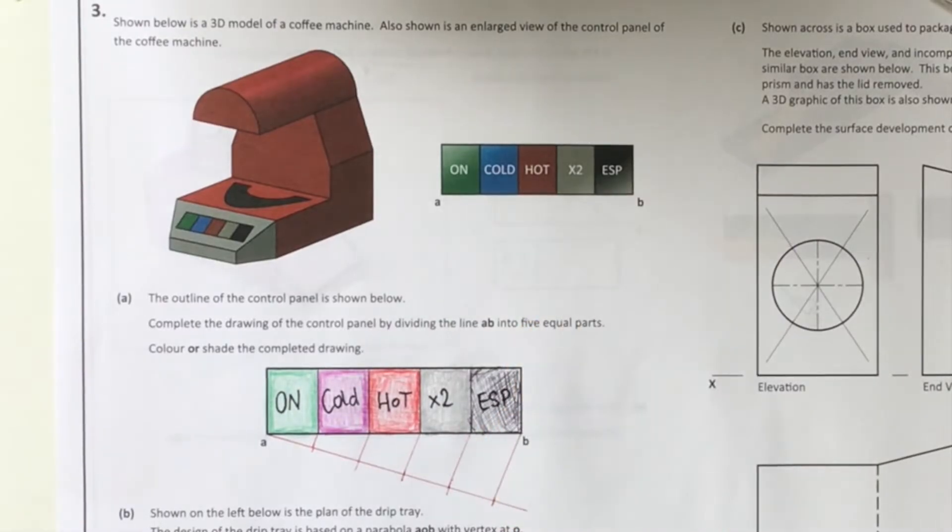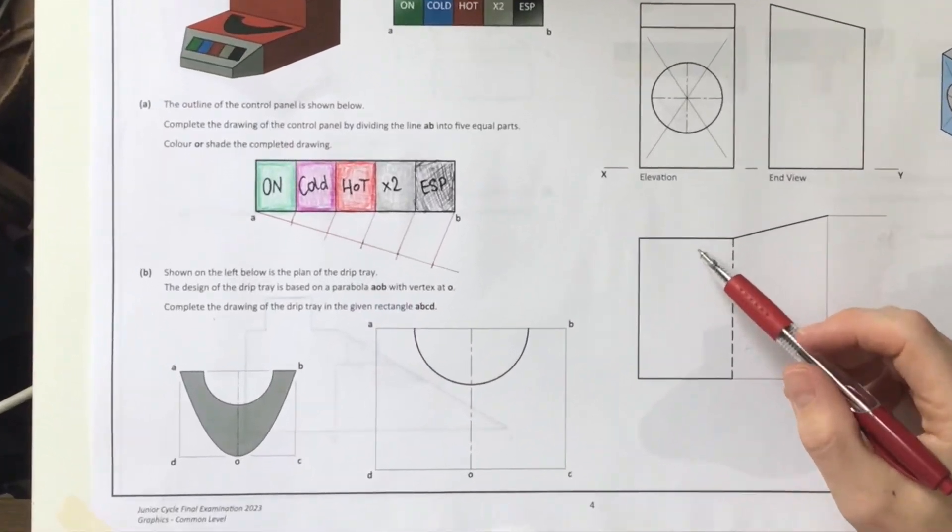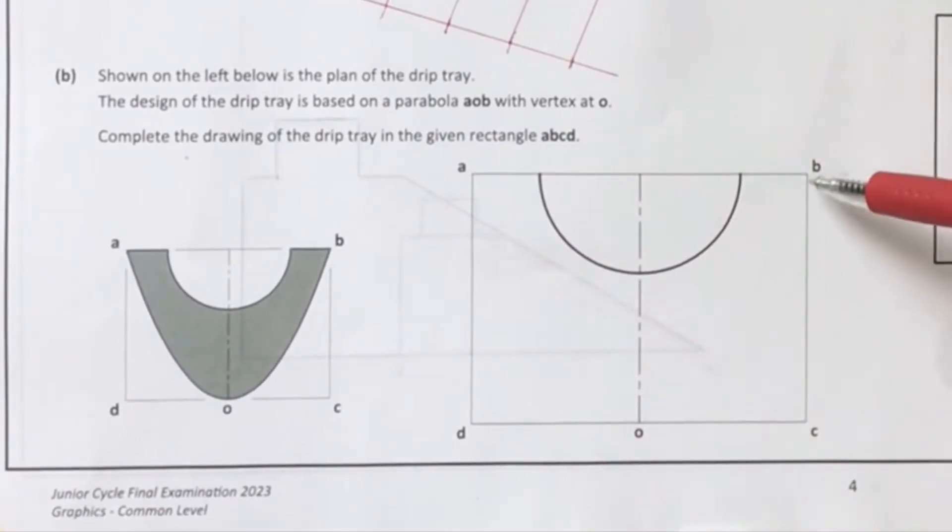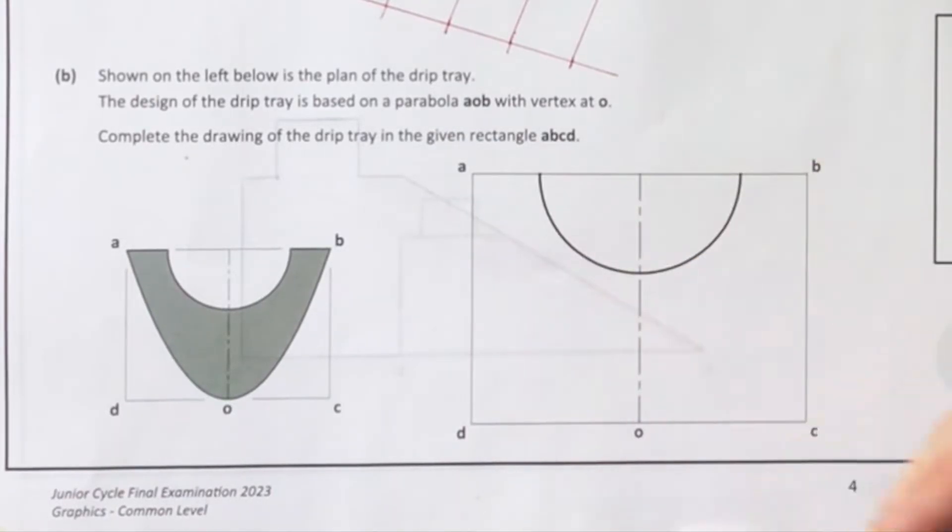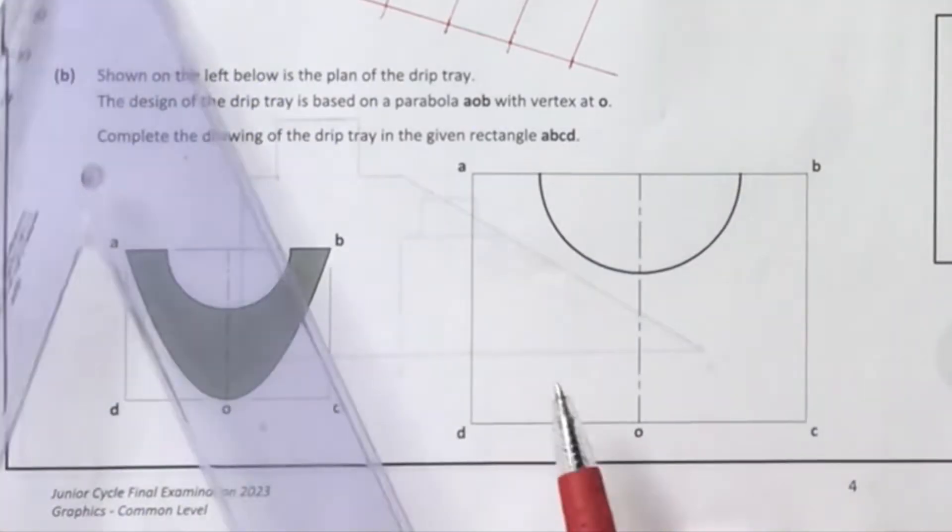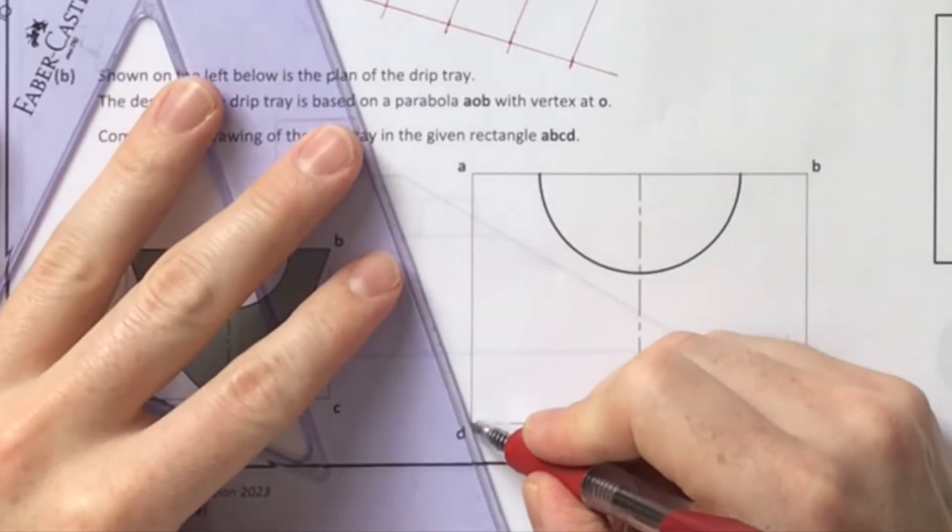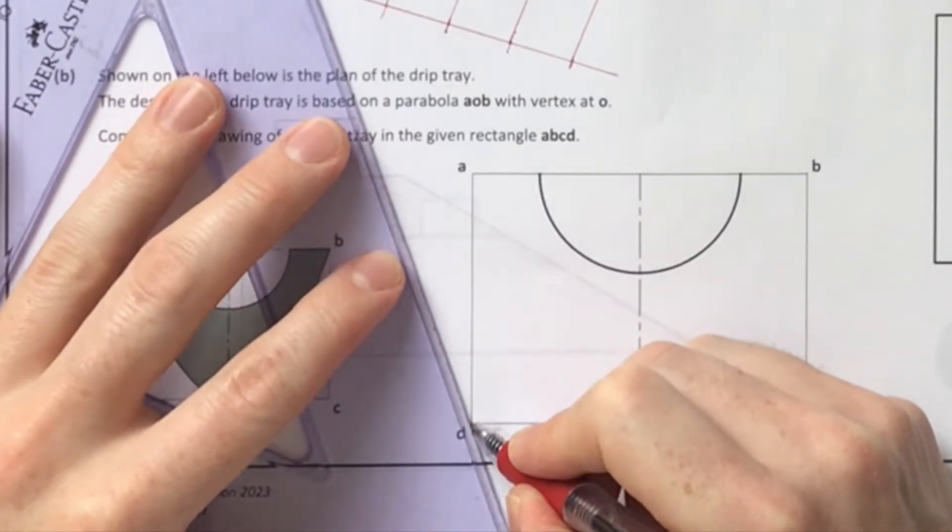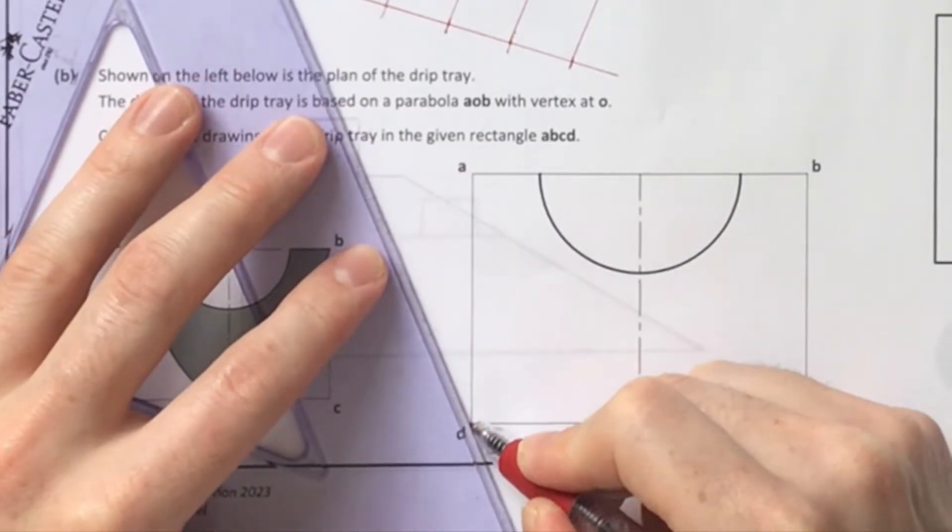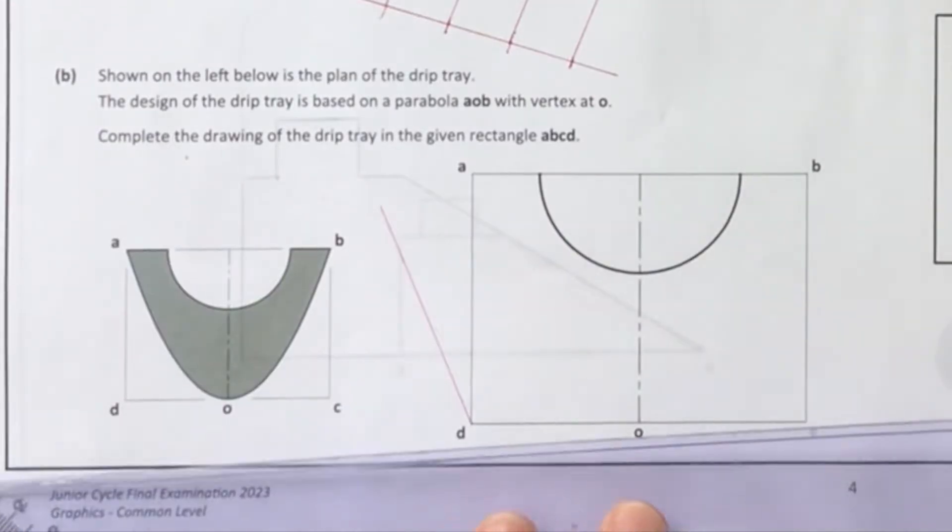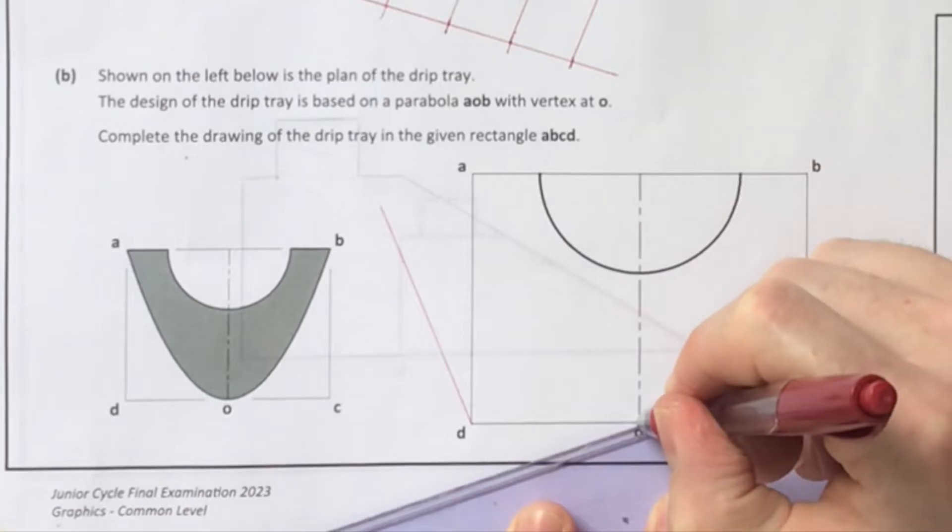Question 3B is a parabola question. We have to draw a parabola between A, O and B. I'm going to divide up the line AD using our division of a line technique from the question above. I'm going to divide the length of line OD as well. I'm drawing any old acute angle from both of those points, O and A.